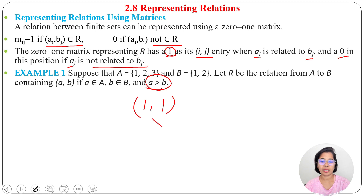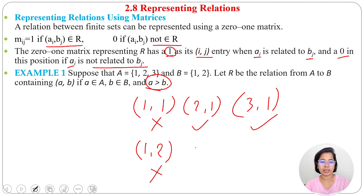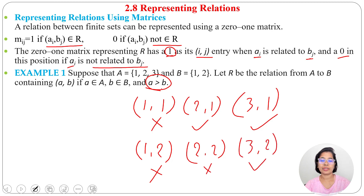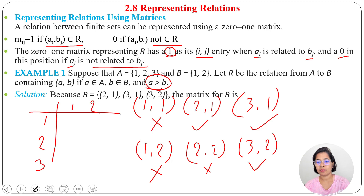Now checking each pair: (1,1) — is 1 greater than 1? No. (2,1) — is 2 greater than 1? Yes. (3,1) — is 3 greater than 1? Yes. (1,2) — 1 is less than 2, so this doesn't belong to the relation. (2,2) — 2 is not greater than 2. (3,2) — 3 is greater than 2, so this belongs to the relation. So R contains (2,1), (3,1), and (3,2).